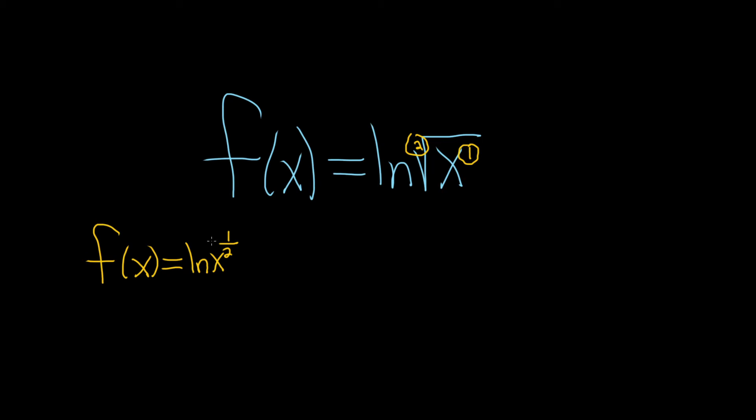And now what we'll do is we'll take the 1 half and we'll bring it down and put it in the front. That's called the power rule for logarithms. So f of x is equal to 1 half times the natural log of x.